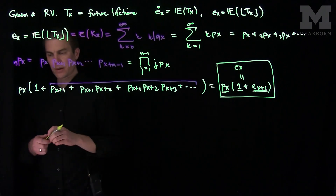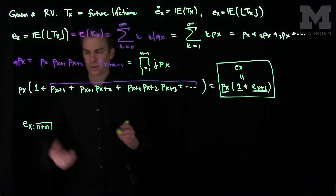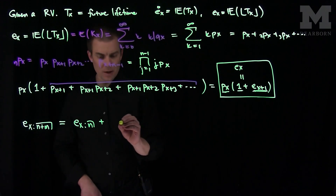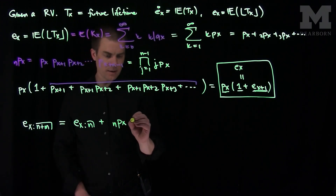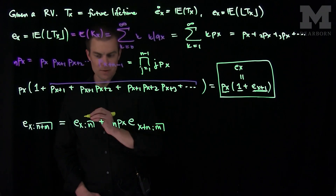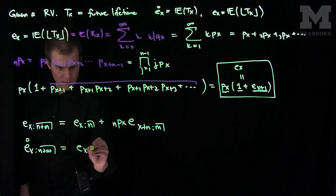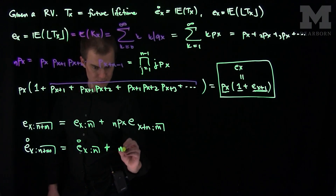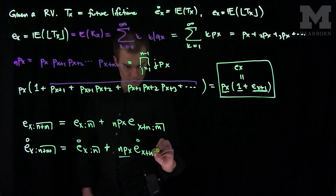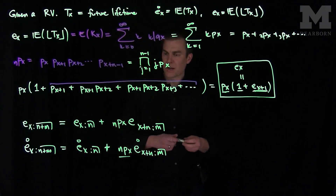We can do similar things at different levels. For the complete expected lifetime, we can write the circle-E of x for n+m steps as Ex-circle-n plus nPx times the temporary complete expected lifetime of x+n for m further steps. Equivalently, Ex-circle for n+m equals Ex-circle-n plus nPx times the circle-E of x+n for m steps. When we do problems with annuities, we'll also have to accumulate interest on these quantities.